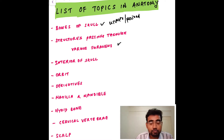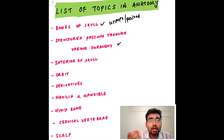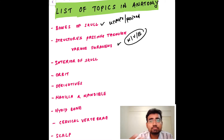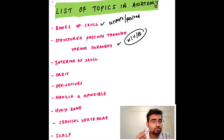The structures passing through each foramen is very important and most crucial because it is very volatile. One piece of advice: write on a piece of paper the particular foramen and the structures passing through it — the nerves, vessels, and blood supply. Stick it to the wall and review it on a day-to-day basis so you can easily remember it.